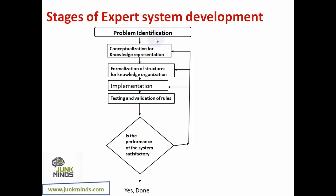How do you design an expert system? First, problem identification — identify what exactly is the problem you are trying to solve. Then conceptualization for general representation — represent the problem in a format understood by the system. Next, formalization of the structures of knowledge organization — decide what your knowledge base will look like, how it is organized, what information needs to be updated or left out. After that, implement the system and carry out testing using various test cases. Check different questions, verify solutions, and finally check performance. If satisfactory, you're done; if not, go back and rectify until the system is developed.